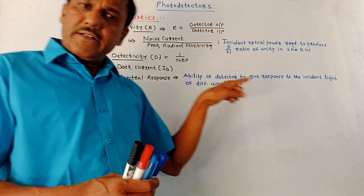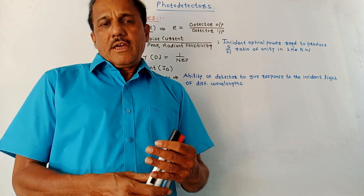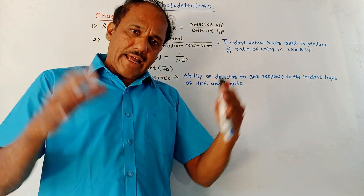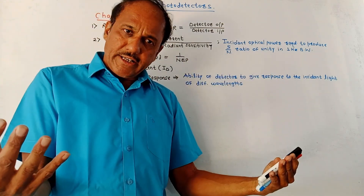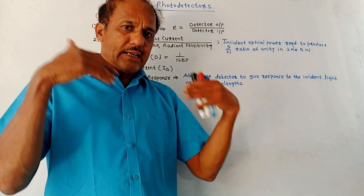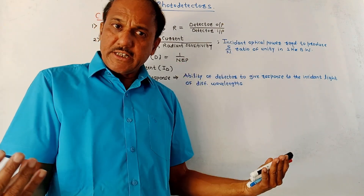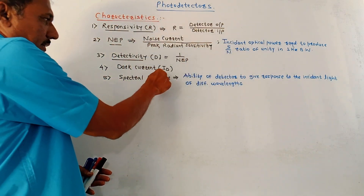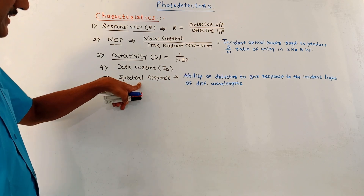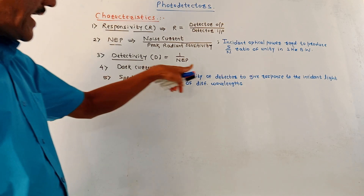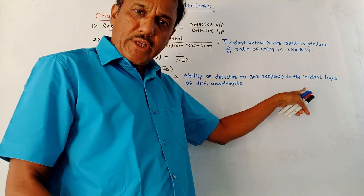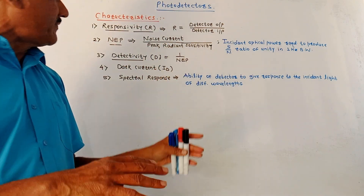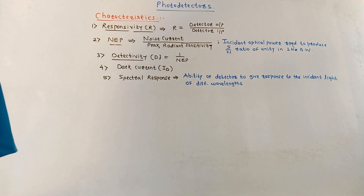Next is the dark current. Even if light rays are not falling on the detector, still some current is generated at the output under darkness conditions. This is called the dark current, denoted by ID. Next is the spectral response — it is the ability of a detector to give response to incident light of different wavelengths. These are the important characteristics of photo detectors.